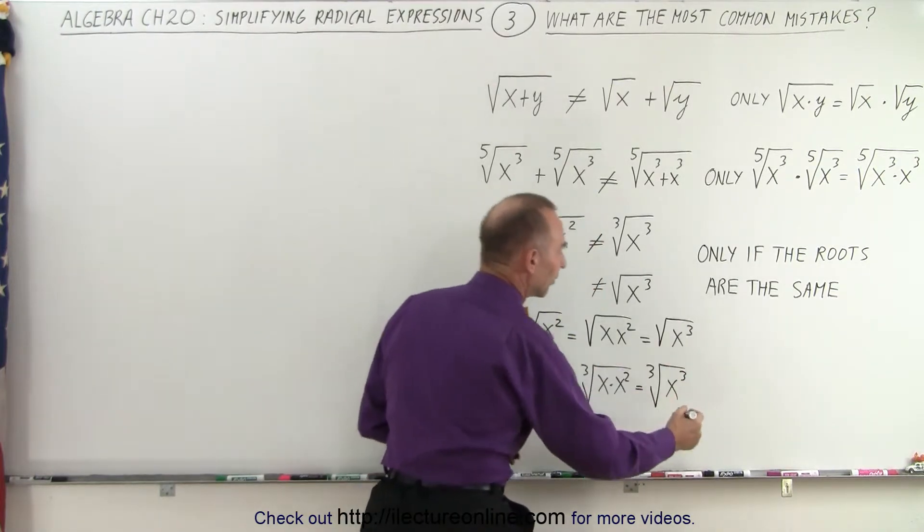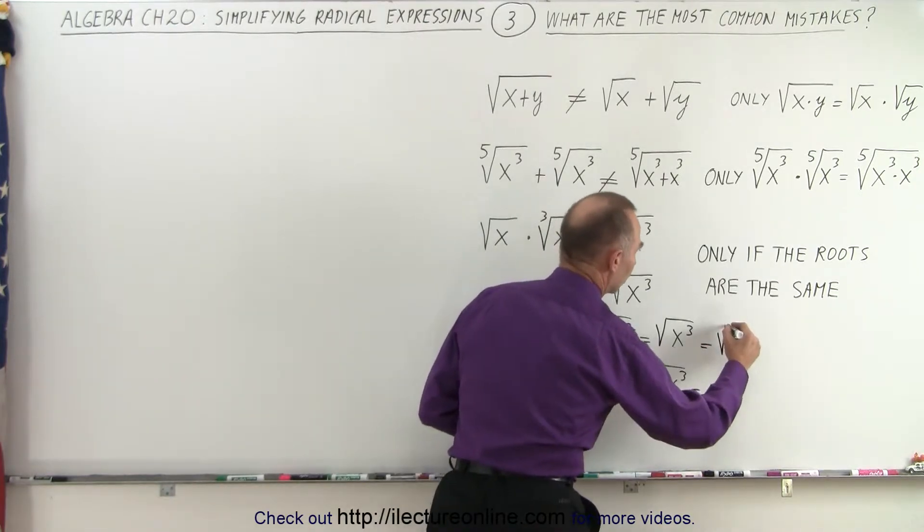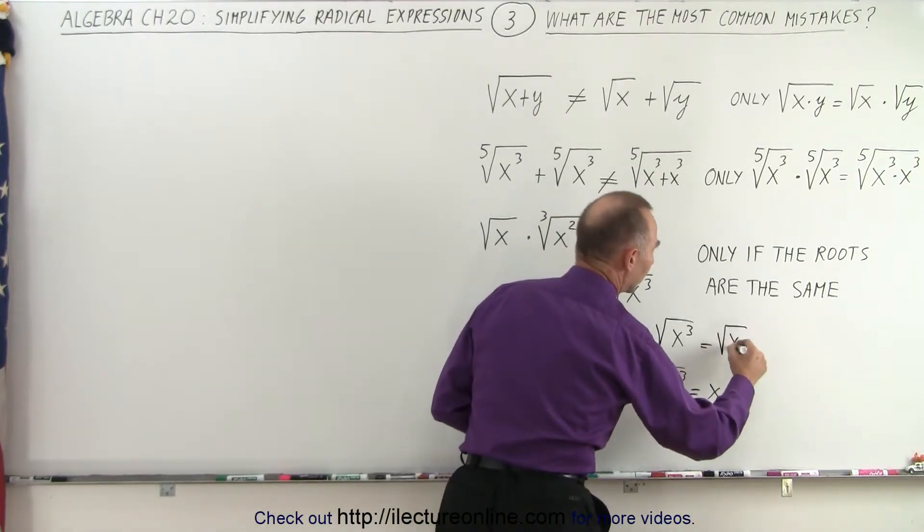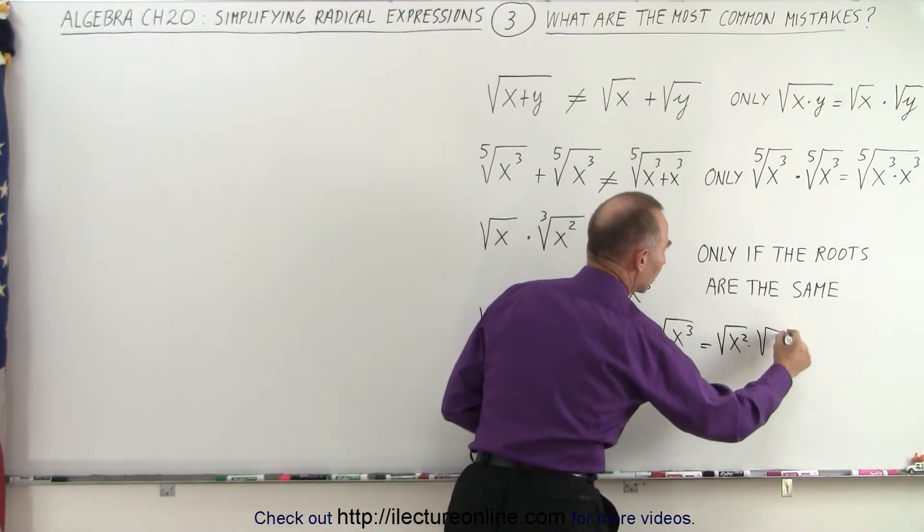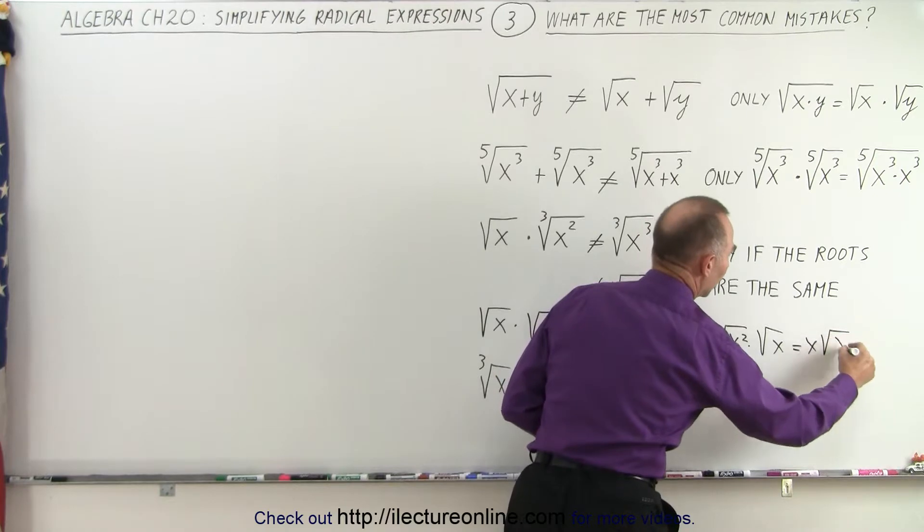And of course, that can then be written as simply x. And this can be written as the square root of x squared times the square root of x, which is equal to x times the square root of x.